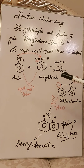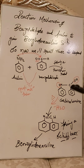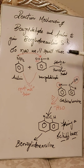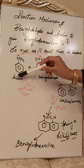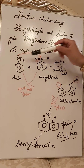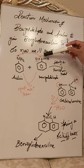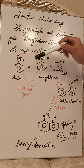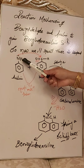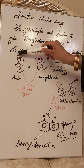Schiff bases are very interesting compounds and there are hundreds and thousands of applications of Schiff bases. We will discuss that further, but first you should know how a Schiff base is formed. We have two compounds: aniline, which is a benzene ring with an NH2 group, and benzaldehyde, which is a benzene ring with an aldehyde group.